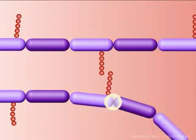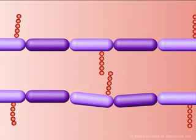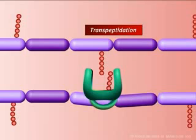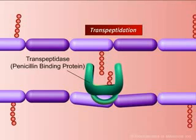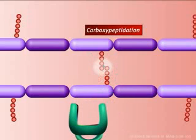This peptidoglycan precursor is then transported across the cell membrane to a cell wall acceptor in the periplasm. Once in the periplasm, the peptidoglycan precursors bind to cell wall acceptors and undergo extensive cross-linking. Two major enzymes are involved in cross-linking: transpeptidase and D-alanyl carboxypeptidase.